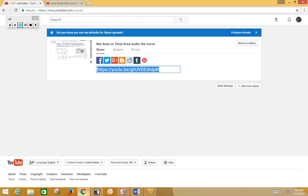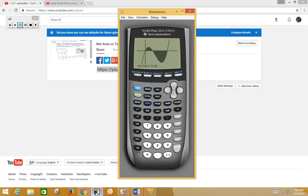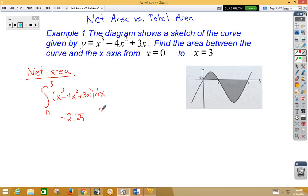If we want that value as a fraction, we could simply hit math 1, enter. And it would give us a fraction of negative 9 fourths. So that's how we would do net area.